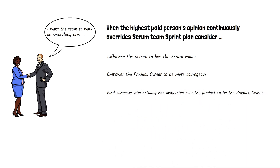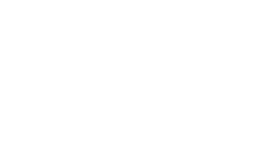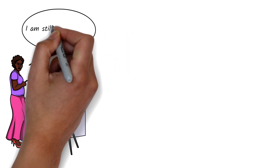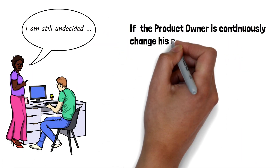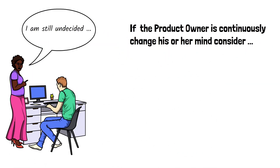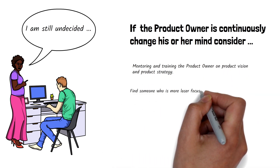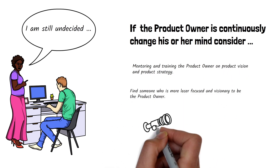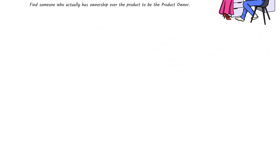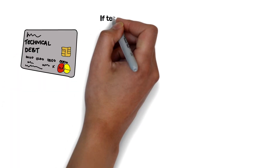If unplanned work continuously emerges in the middle of the sprint because the product owner cannot make up his or her mind, consider mentoring and training the product owner on product vision and product strategy — or find someone who is more laser-focused and actually has long-term vision over the product to be the product owner. I've already made a video to help you identify who is the real product owner in the company — click the link up here to watch it.